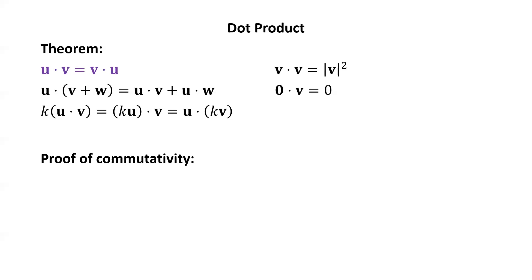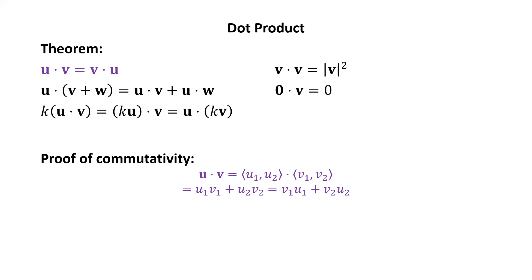As an example, let's prove commutativity in two-space. Start with u·v written in component form as (u1, u2)·(v1, v2). By definition, that's u1·v1 + u2·v2. Since u1, v1, u2, v2 are all real numbers, multiplication is commutative, so we rewrite u1·v1 as v1·u1 and u2·v2 as v2·u2. Then v1·u1 + v2·u2 is precisely v·u. Therefore u·v = v·u for vectors in two-space.